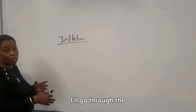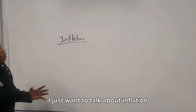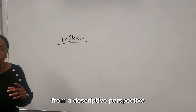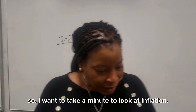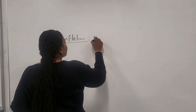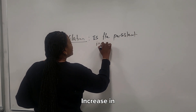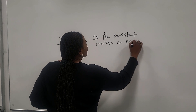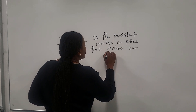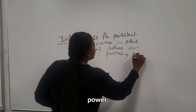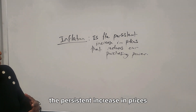Later on I'll go through the macroeconomic policy of stabilizing the economy when we go through inflation. Right now I just want to talk about inflation from a descriptive perspective and look at the types of inflation using the board here. So inflation — I define this as the persistent increase in prices that reduces our purchasing power.